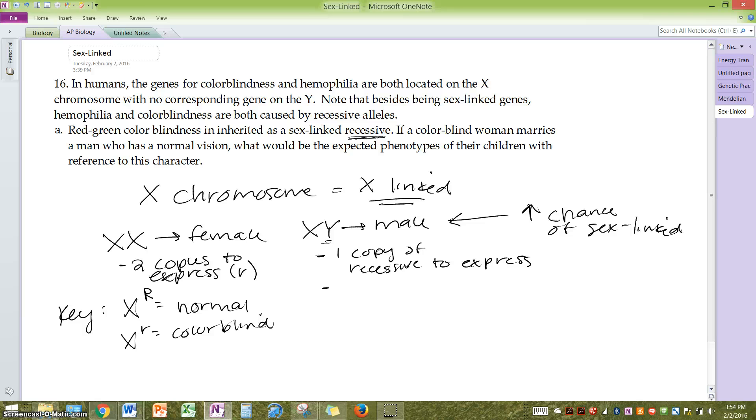Let's get our genotypes for our parents. We have a colorblind woman. Women have two X's. The colorblind is going to be the recessive. In order for her to express this, she needs to have two recessives.